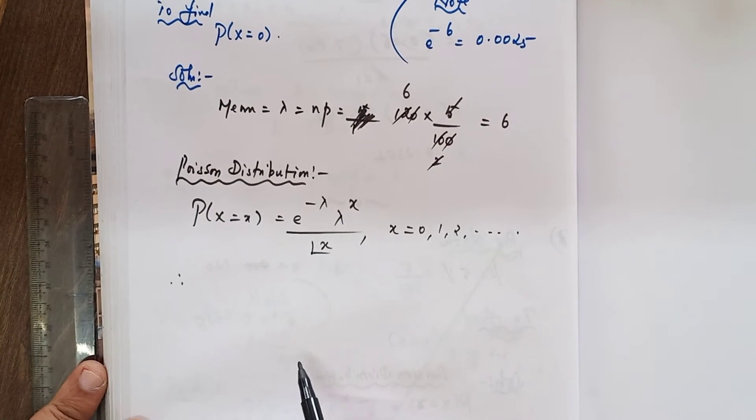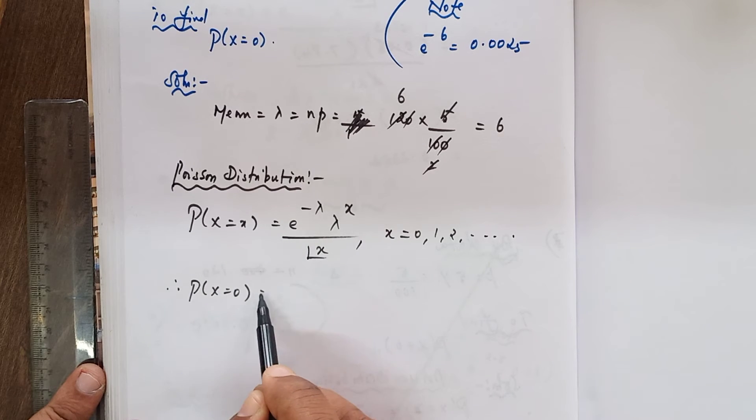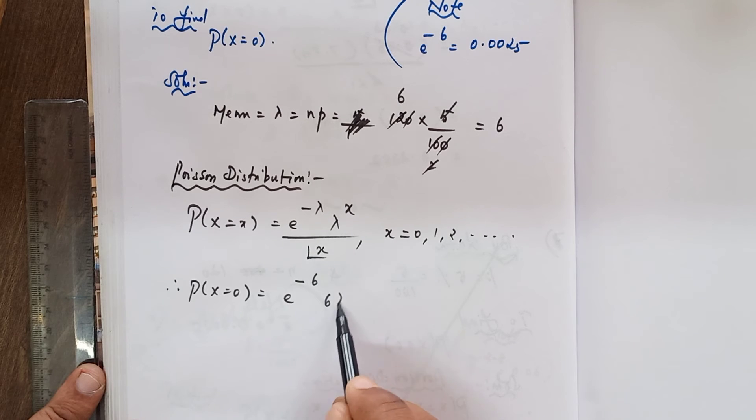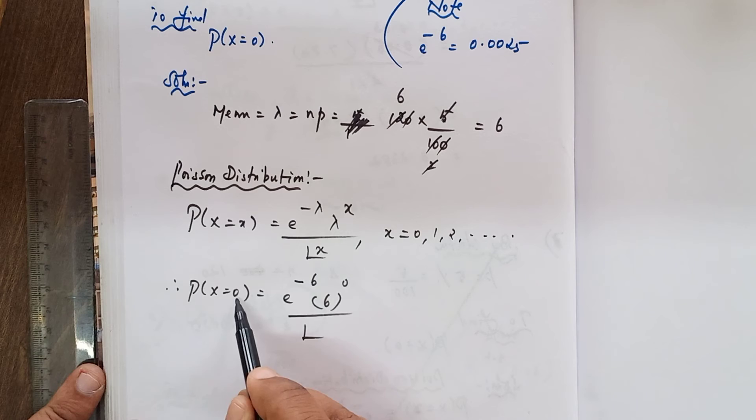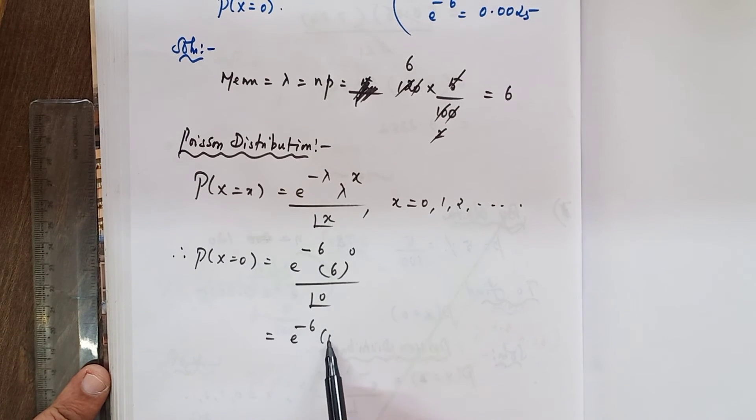You are asked to find out probability of x equals 0. Therefore, small x can be replaced by 0. So e power minus lambda value 6, lambda value 6 power x value 0, divided by factorial 0, equals e power minus 6. Anything power 0 equals 1, and 0 factorial also equals 1. That gives e power minus 6.